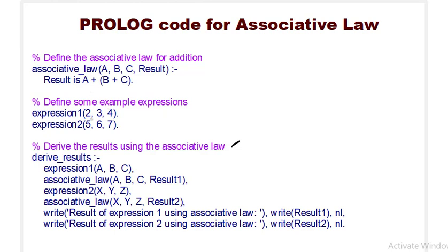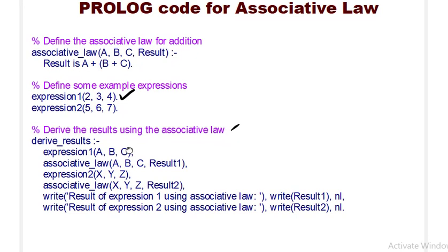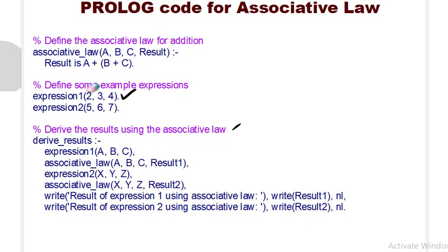Then we define two expressions. Expression one has values 2, 3, 4. Expression two has values 5, 6, 7. Then we derive the result using the associative law. The derive_results rule calls expression one with A, B, C and passes those to associative_law(A, B, C, Result). Each clause ends with a full stop.